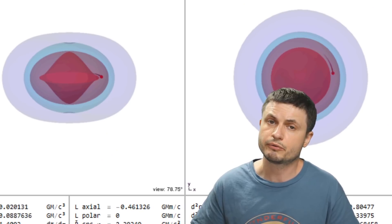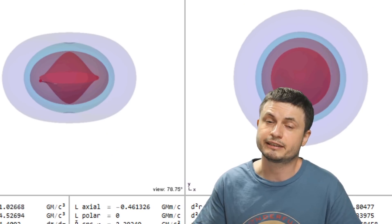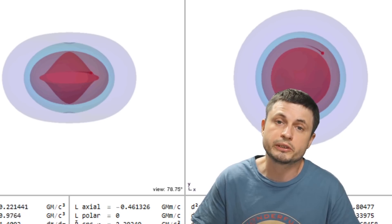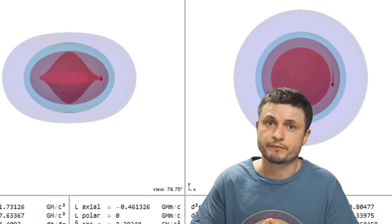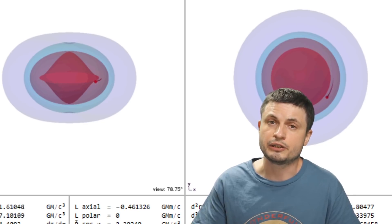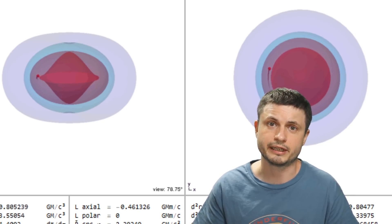And so back in the day, Roger Penrose proposed that, hypothetically at least, it's possible for us to extract some of the spinning energy from this region. Because unlike the event horizon, you could hypothetically escape from the ergosphere.